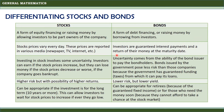In bonds, the investors are guaranteed interest payments and a return of their money at the maturity date. Moreover, investing in stock involves some uncertainty — investors can earn if the stock prices increase, but they can lose money if the stock prices decrease, or worse, if the company goes bankrupt.